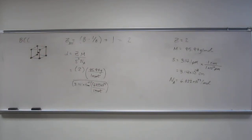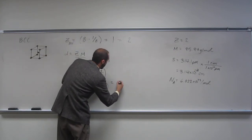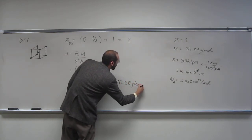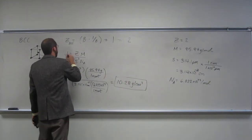Okay, so, let's do it. 3.141 times negative 8 cubed times 6.022 times 10 to the 23 divided by 2 times 95.94, and we should have 4 sig figs, so I get 10.28 grams per cubic centimeter as the density of molybdenum.